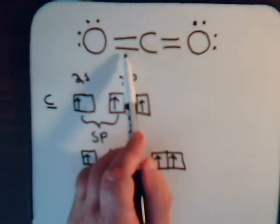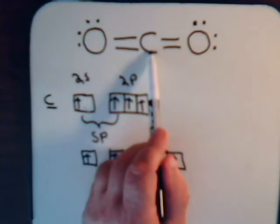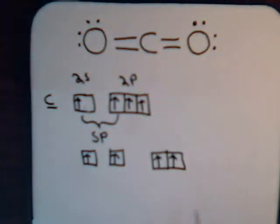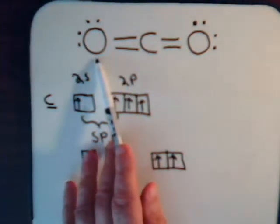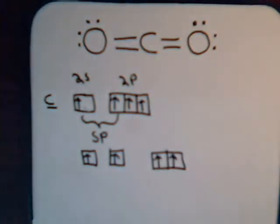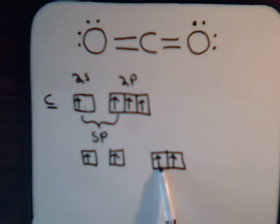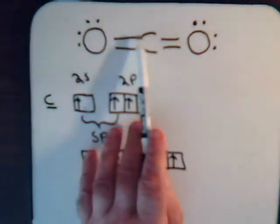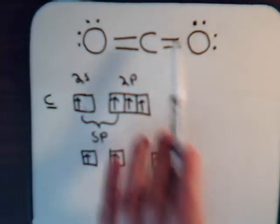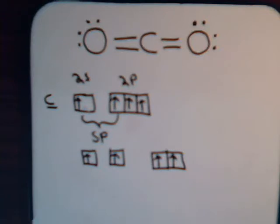An sp orbital will form a sigma bond with the oxygen. And the two unhybridized p electrons — we have two bonds here and here — can participate in forming the pi bonds with the oxygen. So carbon is sp hybridized.